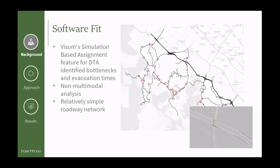We chose to use Visum for this project for a couple of reasons. The simulation-based assignment is a great tool for visualizing and identifying where congestion is occurring, and we can get results for different travel times in small time segments. We were also only looking at vehicle trips — we might have preferred a different tool if looking at other transportation modes. Additionally, this town has a simple roadway network of mostly two-lane roadways with two-way stop or all-way stop intersections, so the level of effort to build a detailed network for DTA was not too bad.